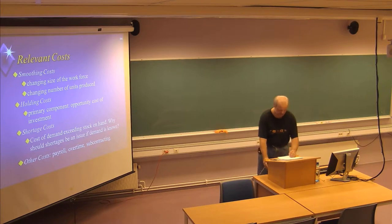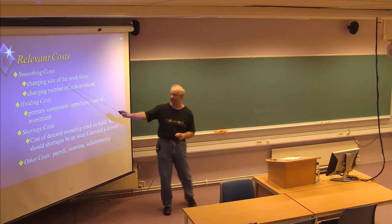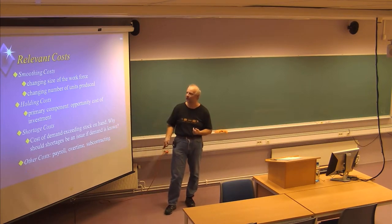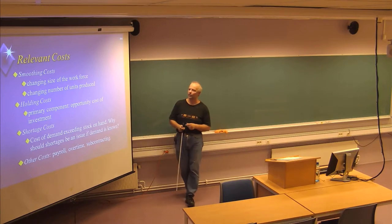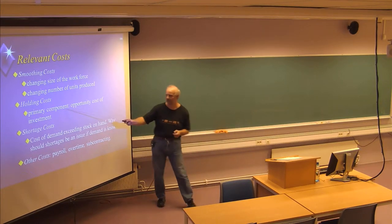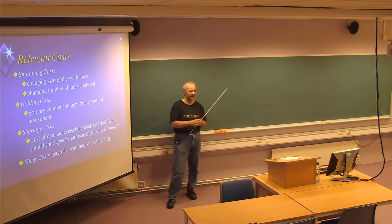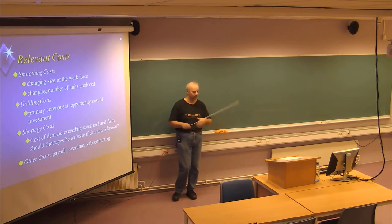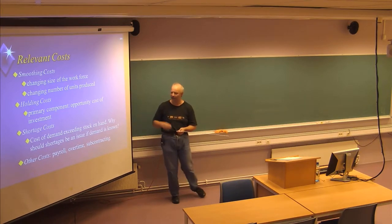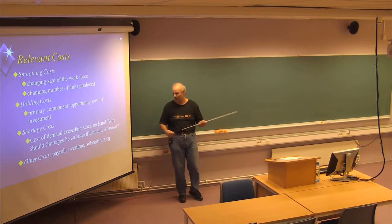We have different types of costs. Smoothing costs involve changing the size of the workforce or changing the number of units produced. Holding cost is quite important — it is the cost of storing inventory. The primary component is what we call the internal interest rate, the opportunity cost of investment. If you invest in a large stock, you cannot use that money otherwise. If you don't have that large stock, you could put the money in the bank and earn interest, or invest it elsewhere.